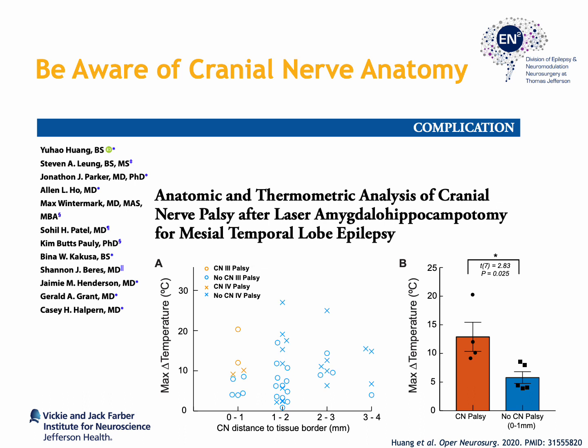As much as I've emphasized biasing the ablation more medially, it's critical to keep in mind what lies on the other side of the pial border within the cisterns. Specifically, we should be worried about the third and fourth cranial nerves, as heat spread to these structures can result in diplopia, whether temporary or permanent. Typically, the cerebrospinal fluid within the adjacent cistern acts as an excellent heat sink, but if the cranial nerve runs too close to the mesial structures, there may be little to no potential for CSF to serve this purpose.